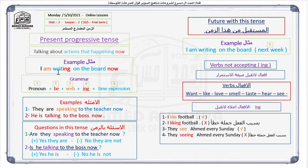Look at this: 'I am writing on the board now.' That gives us elements one, two, three, four, and five — now is number five. Another example: 'They are speaking to the teacher now.' That also has five elements. Actually, if you have the four basic elements — pronoun, plus be verb, plus main verb, plus -ing — they are enough to indicate that this is the Present Progressive Tense.